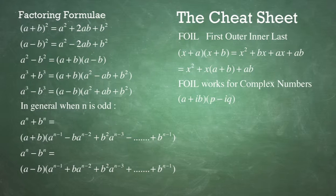For example, A plus IB times P minus IQ. First term: A times P. Outer term: A times negative IQ gives minus IAQ. Inner terms: IB times P gives IBP. And the last term: IB times negative IQ.